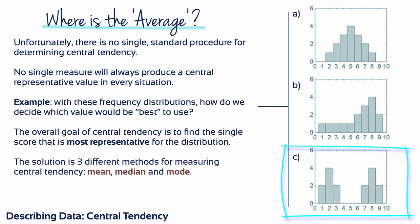On the other hand, because there are two separate piles of scores with one group centered at x equals 2 and the other centered at x equals 8, it's tempting to say that the distribution has two centers. But how can one distribution have two centers? To deal with these problems, statisticians have developed three different methods for measuring central tendency: the mean, the median, and the mode.